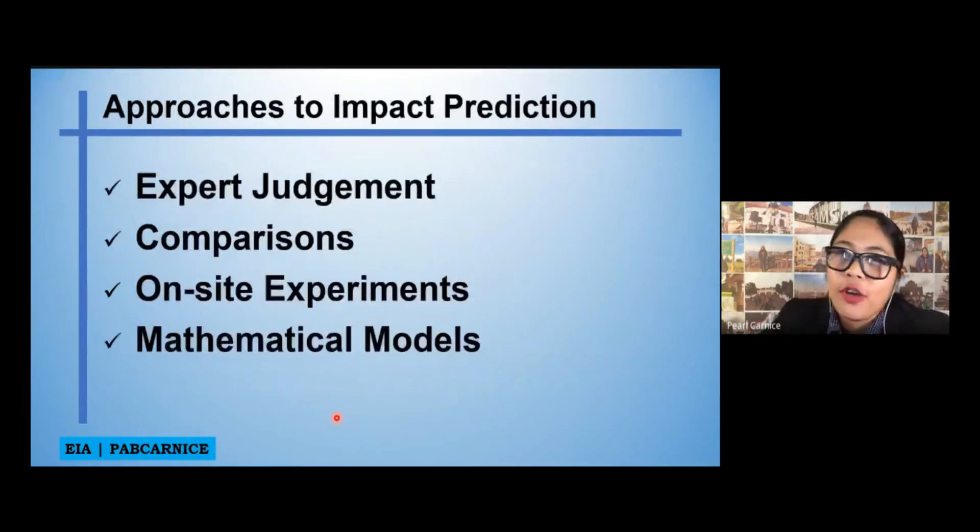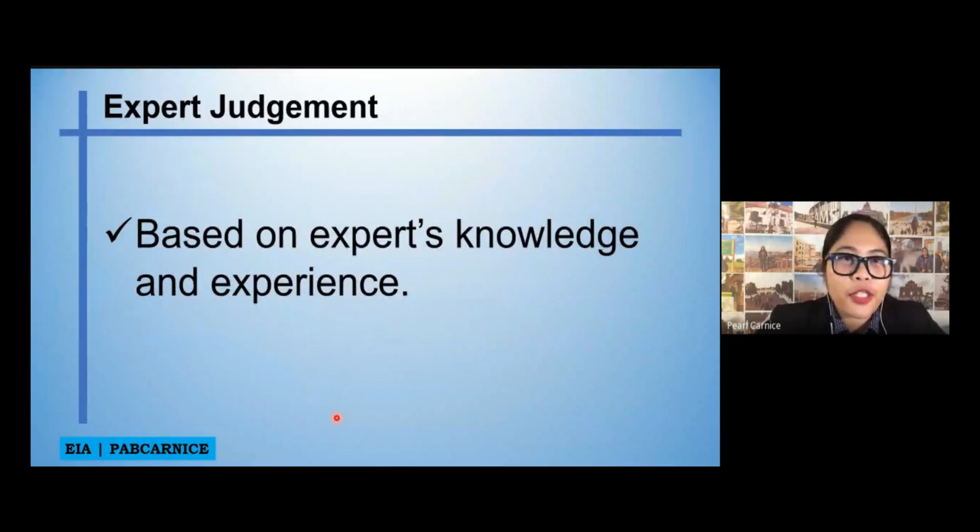Approaches to impact prediction. We have expert judgment, comparisons, on-site experiments, and mathematical models. So first, when we say expert judgment, this is based on experts' knowledge and experience. That is why when you make your EIA study or if you've already read the examples, the two examples that I gave you, as you read through, they actually stated the group or the EIA preparer or the EIA group or the list of members who prepare the EIA study.